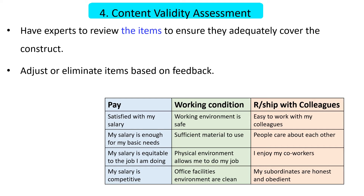After having a pool of items for each dimension, the next step is to assess content validity. We have to provide those items to subject matter experts to get a review or feedback — whether those items adequately represent the dimensions or not. Based on feedback from the experts, we have to adjust or eliminate items that don't represent the dimensions, or add more items that better represent them.